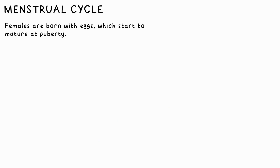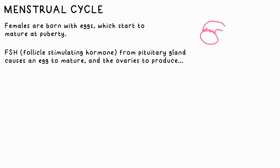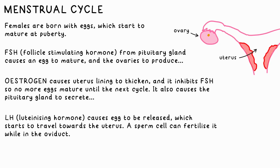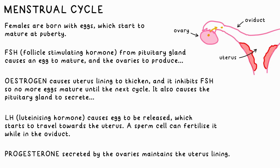Menstruation occurs in females after puberty. First, FSH, made by the pituitary gland, causes an egg to mature in the ovary. This also causes the ovaries to produce oestrogen, which causes the uterus lining to thicken. It also inhibits the production of FSH, so no more eggs mature in that cycle. Oestrogen also causes the pituitary gland to produce LH — luteinizing hormone — which causes the egg to be released, and it starts to travel towards the uterus via the oviduct over several days. Finally, progesterone is also produced by the ovaries, which maintains the uterus lining.